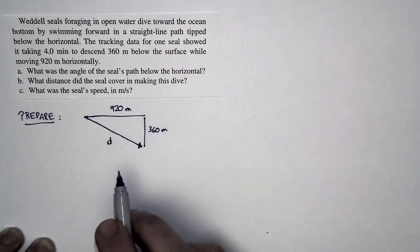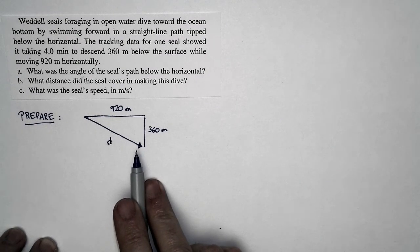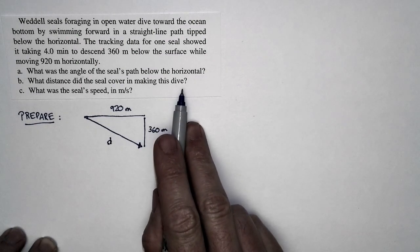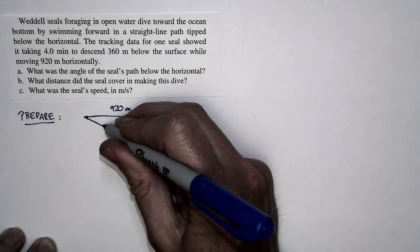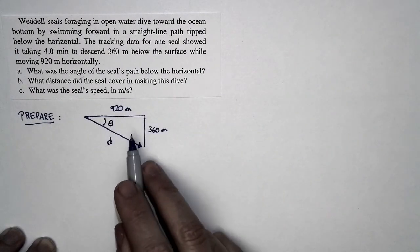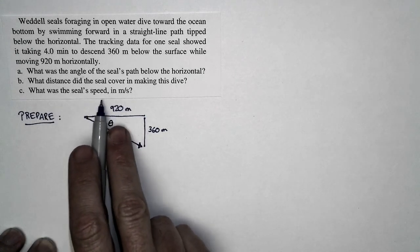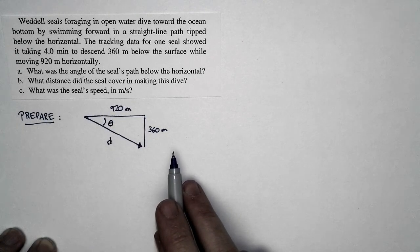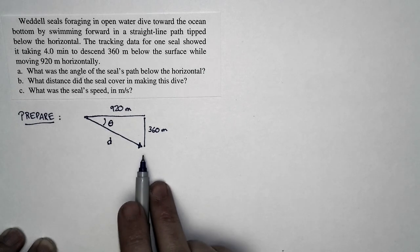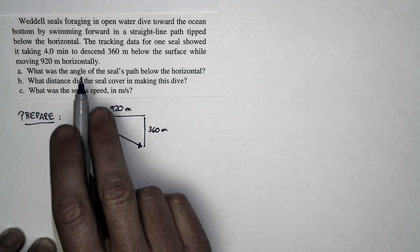This distance d is how far the seal moved, and that's one of the things we're asked to find. We're also asked to find the angle of the dive path below the horizontal, which is this angle right here. Finally, we're asked to figure out the seal's speed in meters per second.